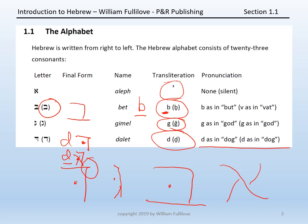Before moving on, get to where you can say these four letters from memory: Aleph, Beit, Gimel, Dalet. Having done that, begin to write the letters as you say them. Do that until you can safely and reliably both say the letters in order and write them. Then you're ready to move on to the next four letters.